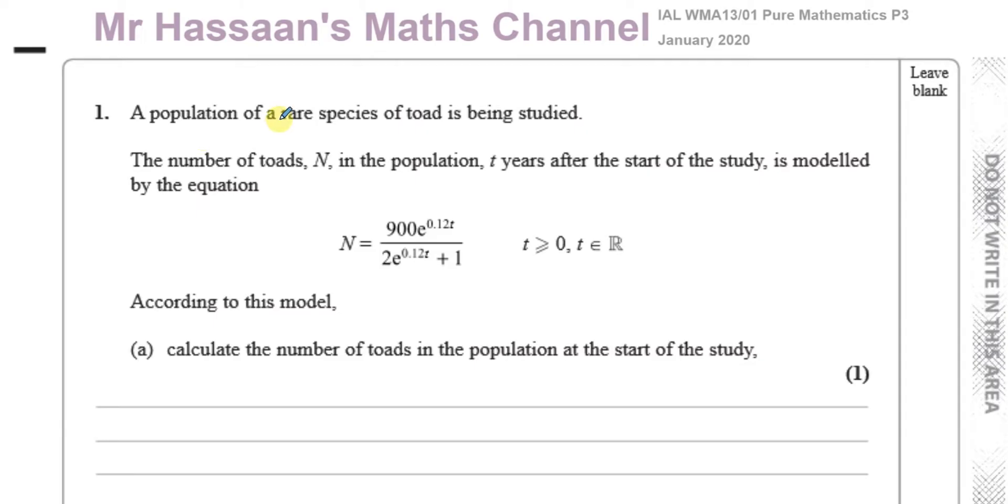Now, a population of a rare species of toad is being studied. The number of toads N in the population t years after the start of the study is modelled by this equation. Given N equals 900e to the power of 0.12t over 2 times e to the power of 0.12t plus 1. t is greater than or equal to 0 as we know because it's time, it can't be negative. And it's also an element of the real numbers.